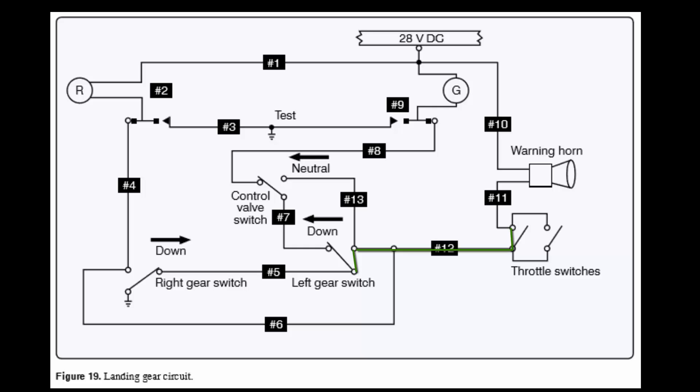So that leaves us either wire 5 or wire 6. And it said throttles retarded with only the right gear down. So if the right gear is down, it's flipped over here to the right. And that means the only path to ground will be through wire 5, which means the left gear switch will have to be up. This is very similar to the last question that we had.